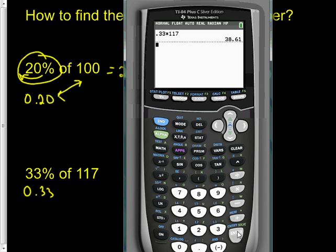0.33 times 117 is 38.61, so what's 33% of 117? It's 38.61.